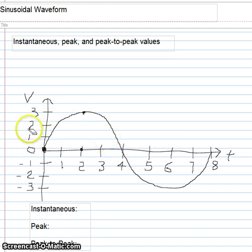The vertical axis shows the value of the voltage or current values, such as 0, 1, 2, or 3. And the horizontal axis shows time, such as 0, 1, 2, 3, etc.